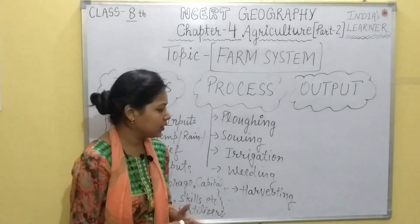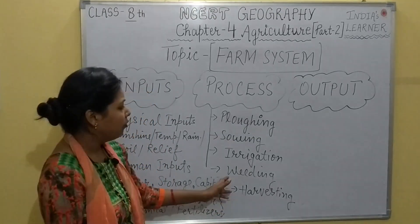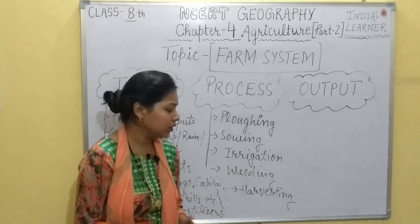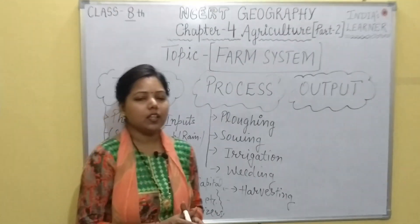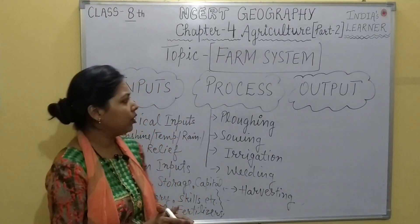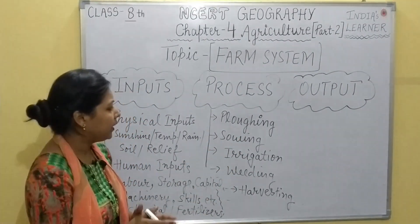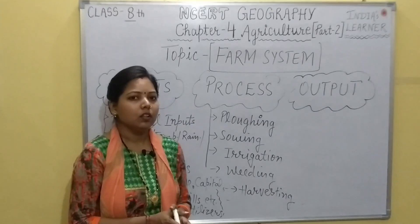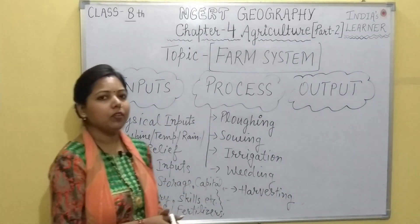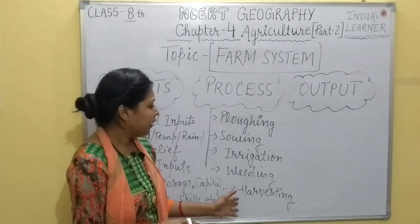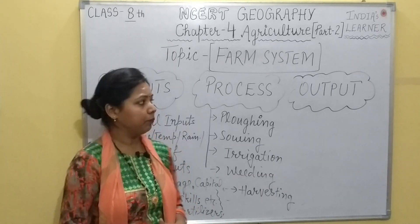Next is sowing — to sow the seeds in the fields. Then irrigation — to supply water in adequate amounts to the farmland. Then weeding — to remove the unwanted parts of the plant. And finally, harvesting — to reap the crops. In every form of agriculture, first we ready the farmland by plowing, then sow the seeds, then supply water through different methods, then remove unwanted plant parts, and when crops are ready, they are harvested and sent to market for selling.